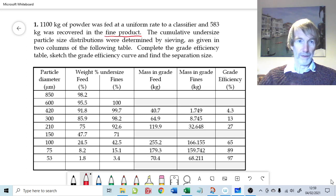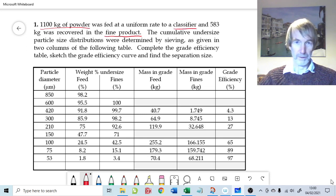This is 1100 kilograms of powder fed at a uniform rate to a classifier. That's a device to simply cut the feed into two. There'll be an overflow and an underflow coming out of the classifier but this is a gas system not a liquid system. The fine product, what I've just called the overflow, is 583 kilograms of that 1100 kilograms. And by inference the coarse product will be 1100 kilograms minus 583.